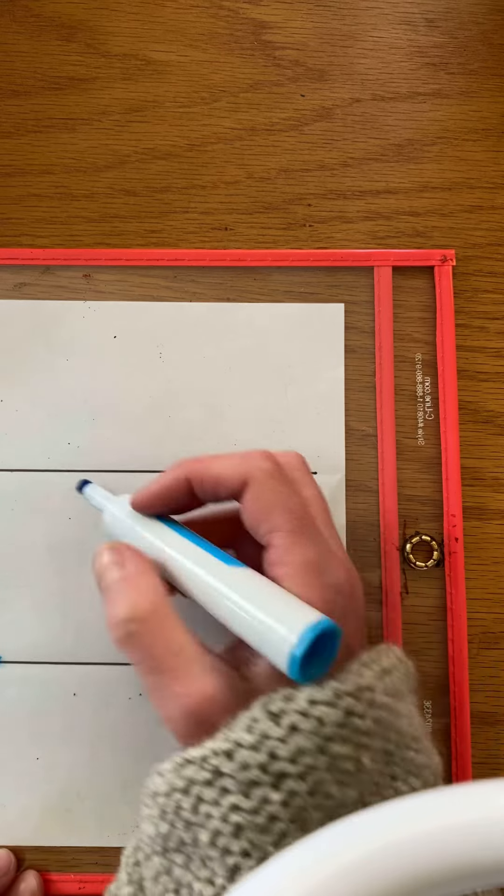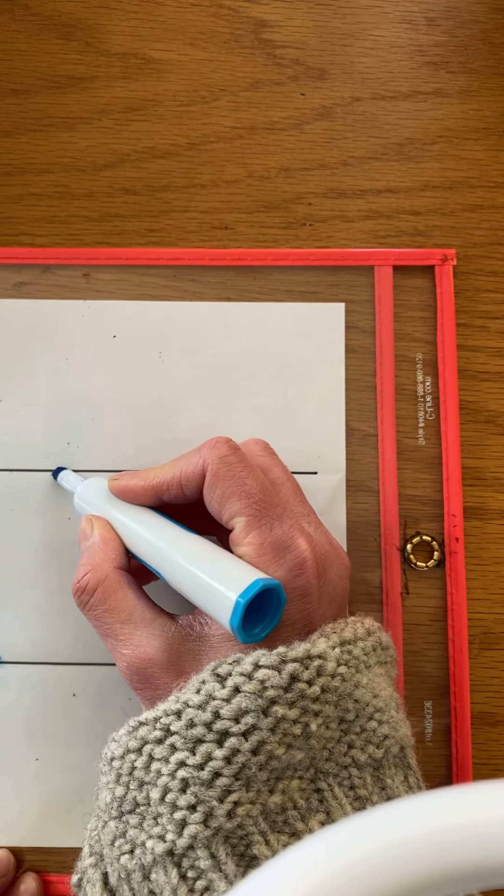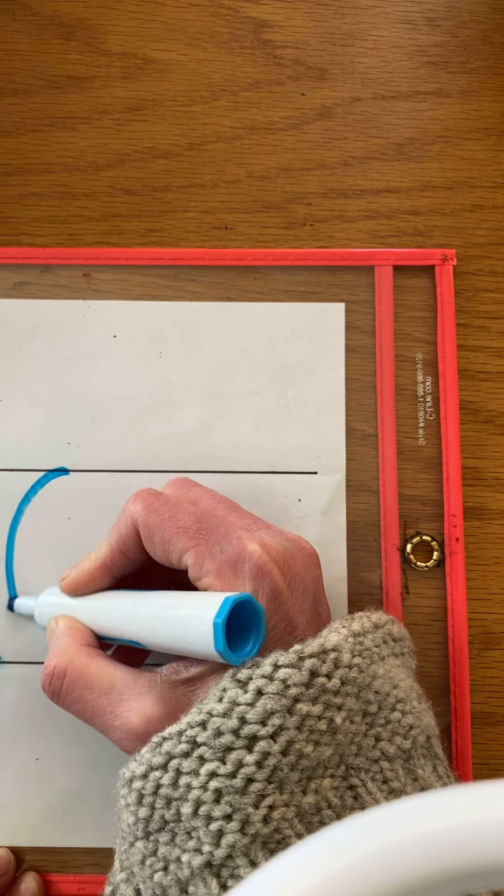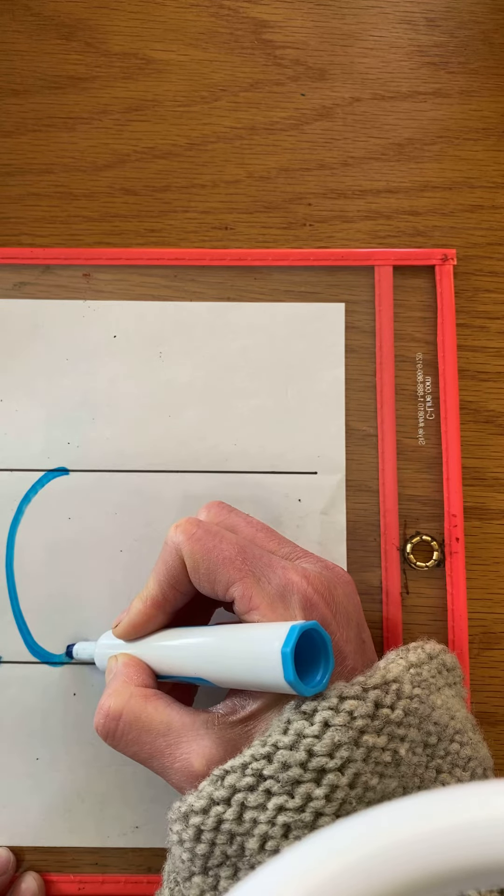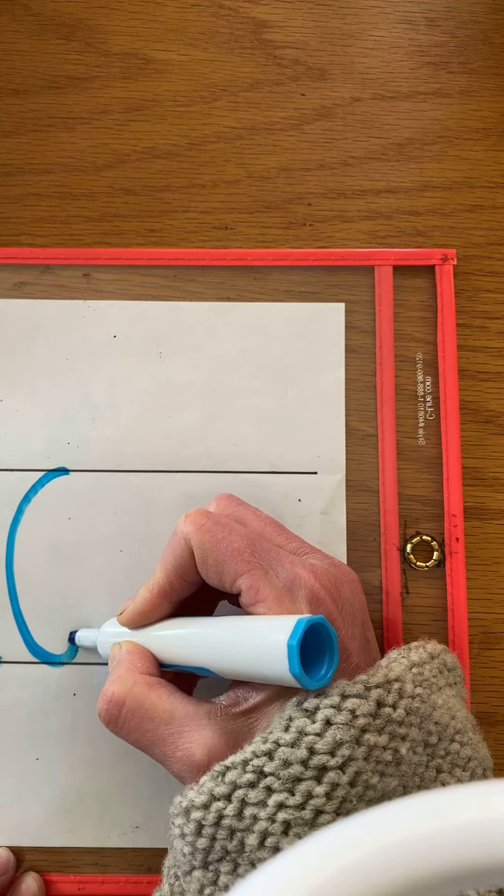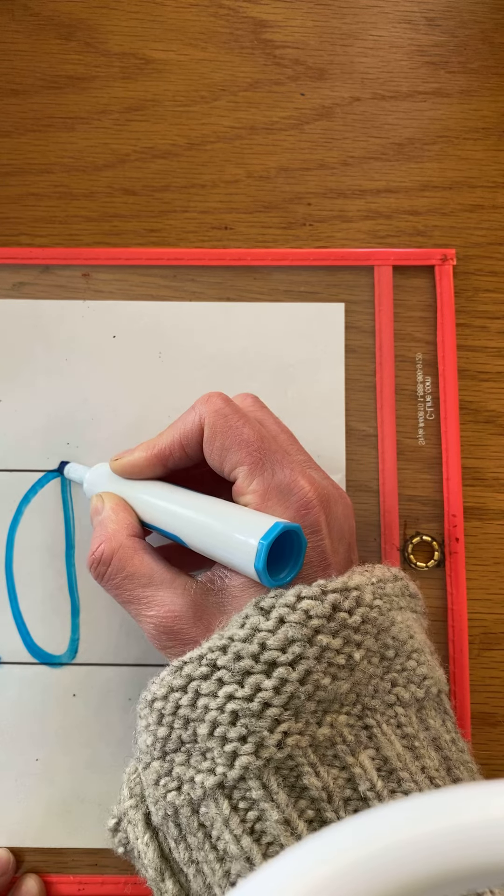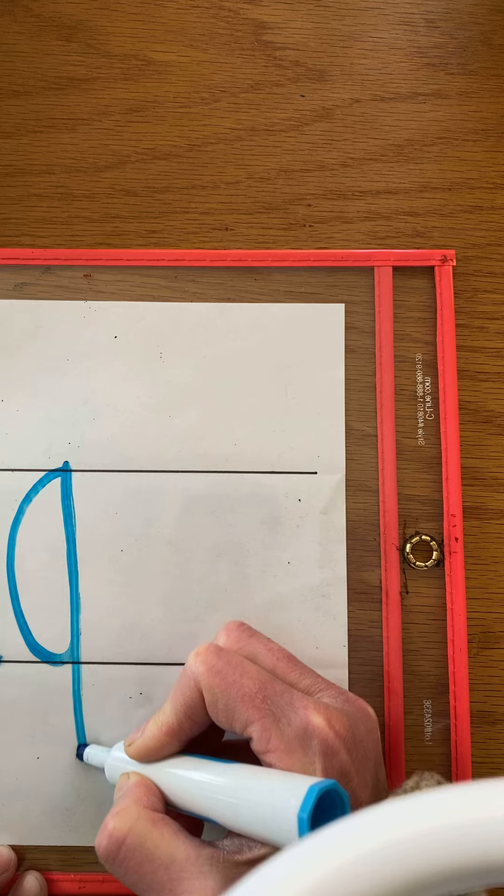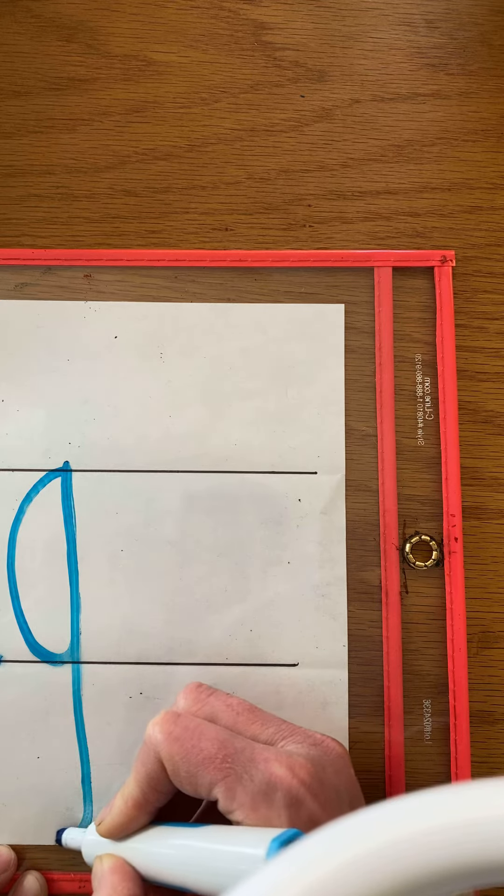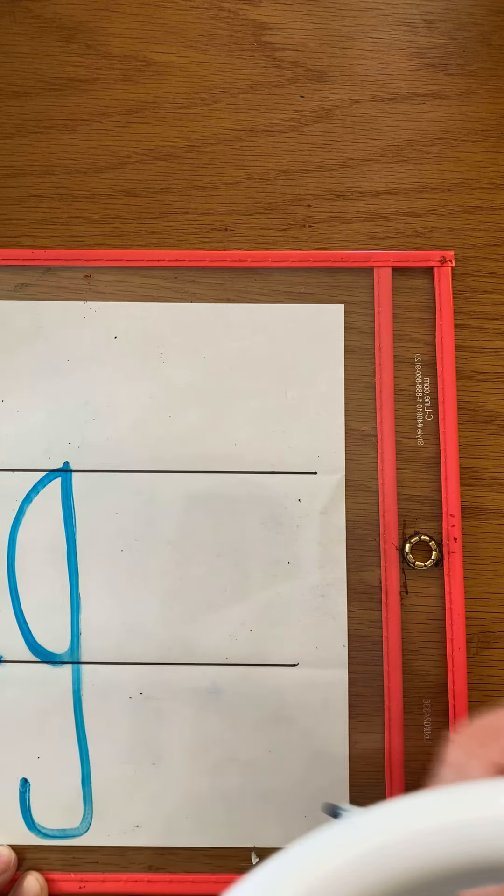The next letter is the letter G. A lowercase g starting the same way with a magic C and then we're gonna turn the C into a G by going up, bumping the line, and then going straight down like a ruler and turning at the end. Voila!